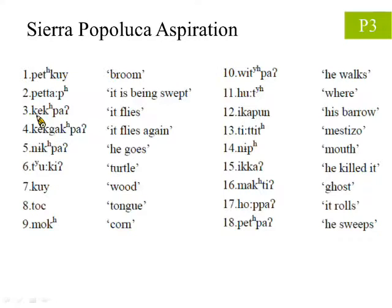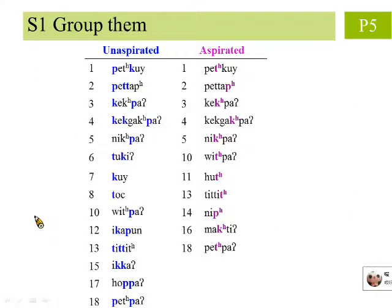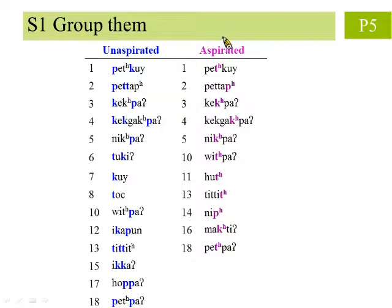Here are some transcribed words of the Sierra Pepluca language. The words in quotes are the corresponding English meanings. Firstly, we group these words according to whether the three phonemes P, T, and K are aspirated. In the group on the left, marked in blue, the three sounds are all unaspirated. Meanwhile, in the group on the right, marked in purple, are the aspirated sounds.